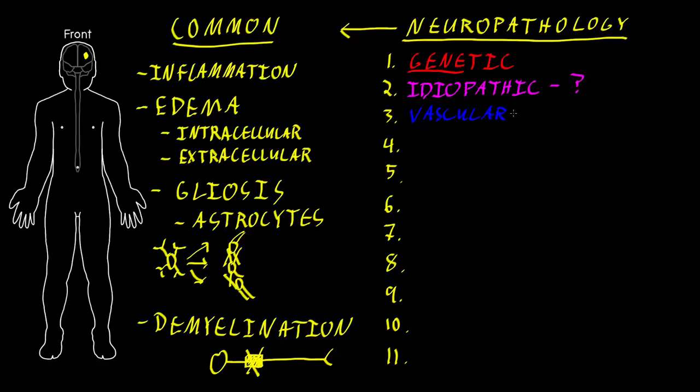The next category I call vascular disorders, which involve abnormalities of blood vessels. A common example would be ischemic stroke, where usually a blood clot has blocked an artery to part of the brain and caused injury to that part of the brain.